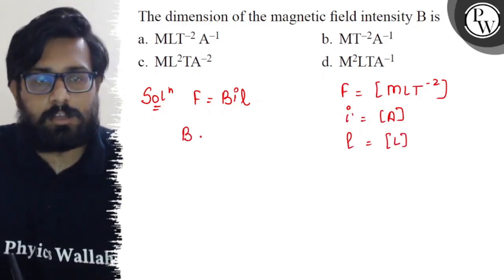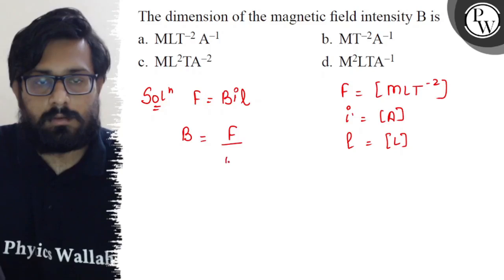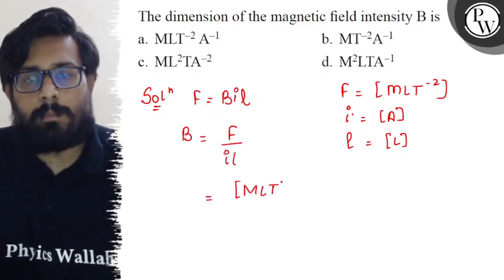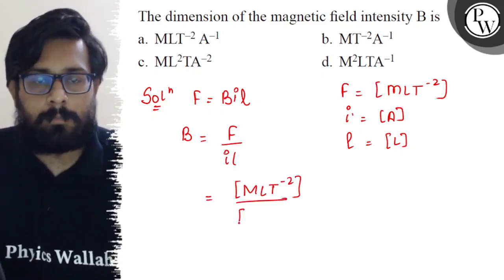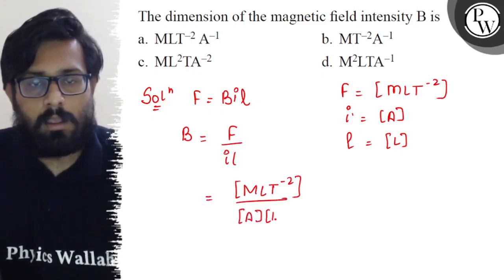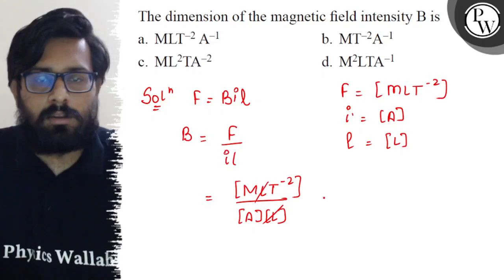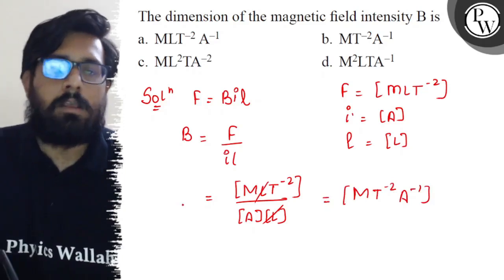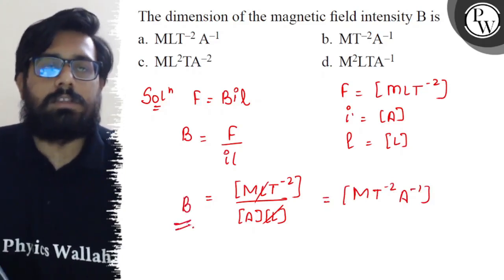So putting the values, from here B comes out to be F upon iL. So putting the dimensions MLT^-2 upon A, and this will be your L. L^2 L get cancelled out, so this comes out to be MT^-2 A^-1.